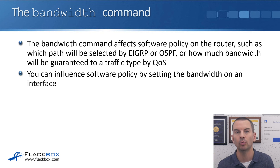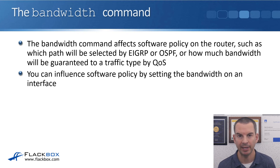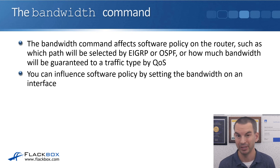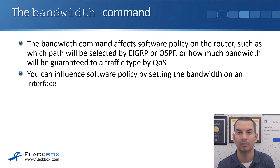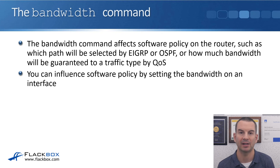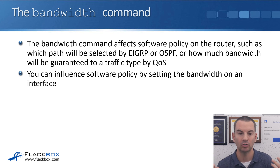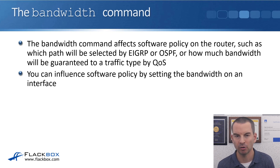You normally want the bandwidth to match the physical interface. On an Ethernet interface it does that by default anyway. On a serial interface it defaults to 1.5 Mbps always, so if it's actually a 64K or 128K interface, you'll want to set the bandwidth command to make sure the bandwidth — which affects software policy — matches the actual physical bandwidth. You don't have to have matching; sometimes you want to override the default. It is possible to set the bandwidth differently than the actual physical bandwidth if you want to influence software policy.